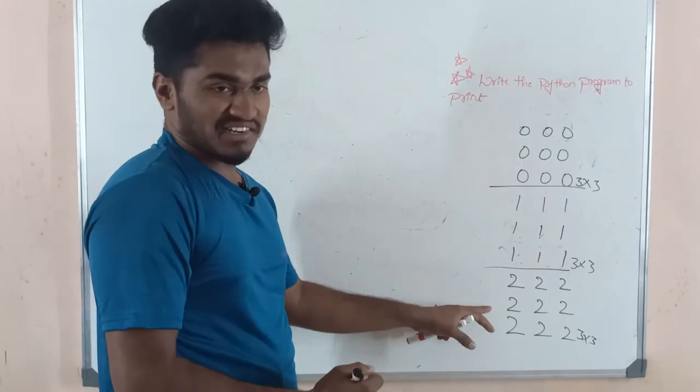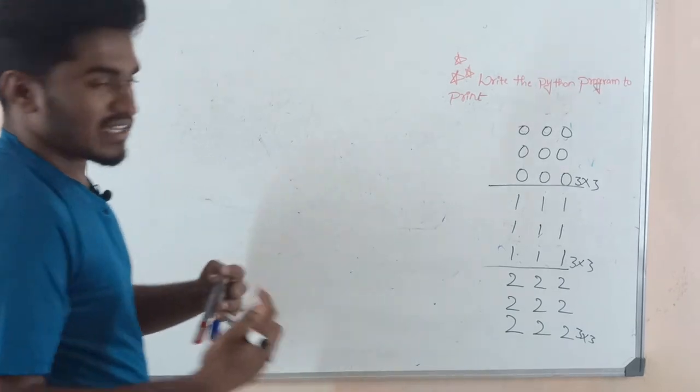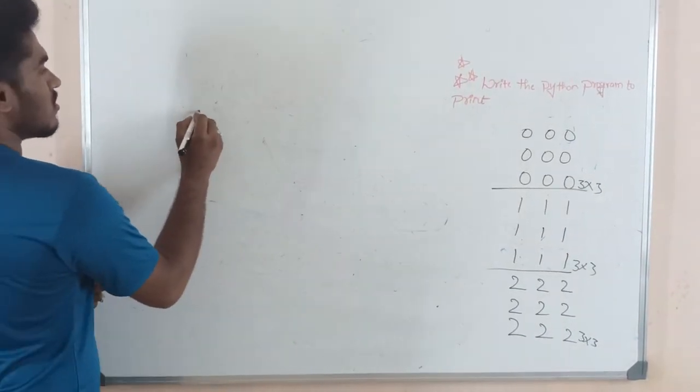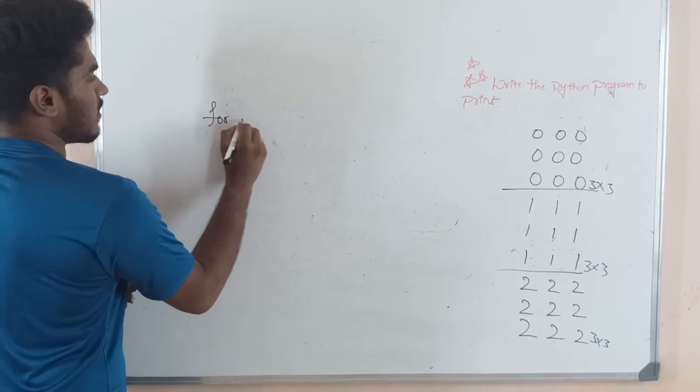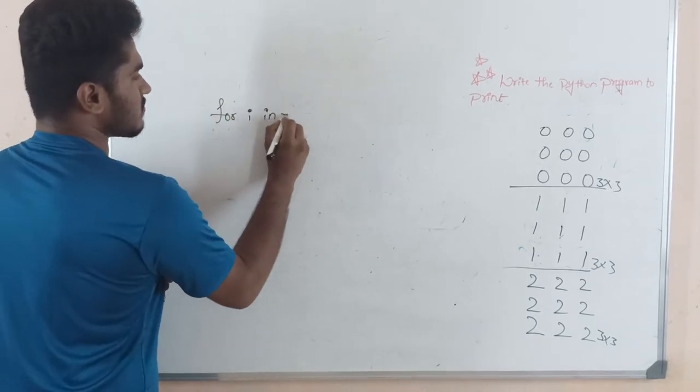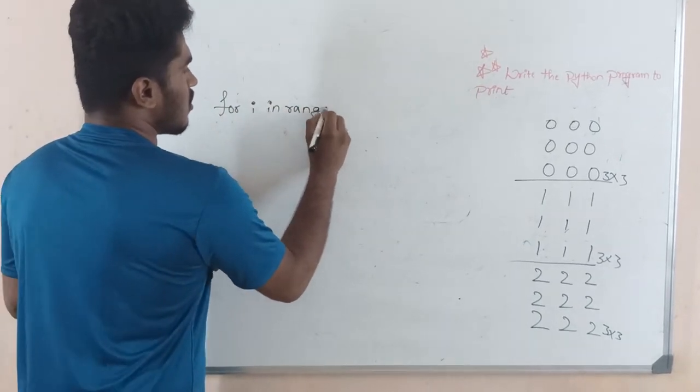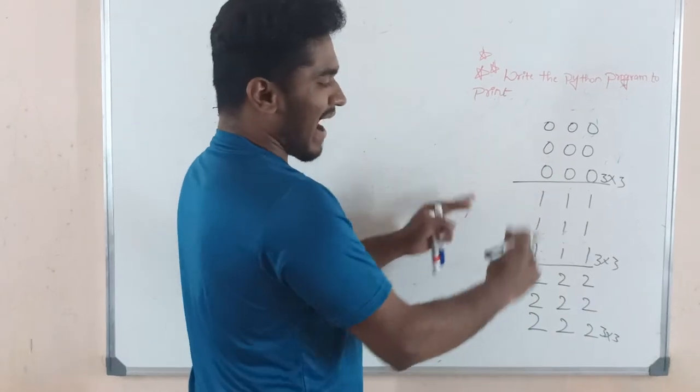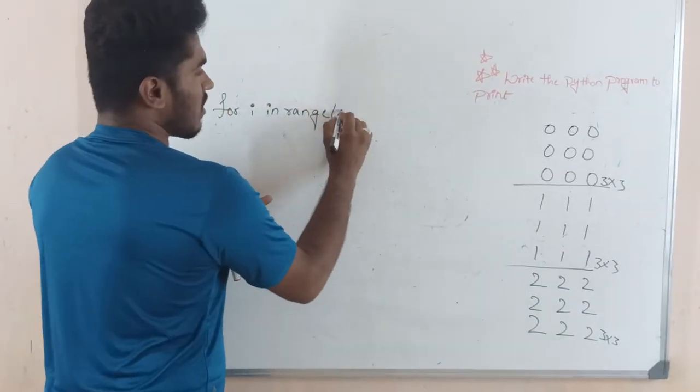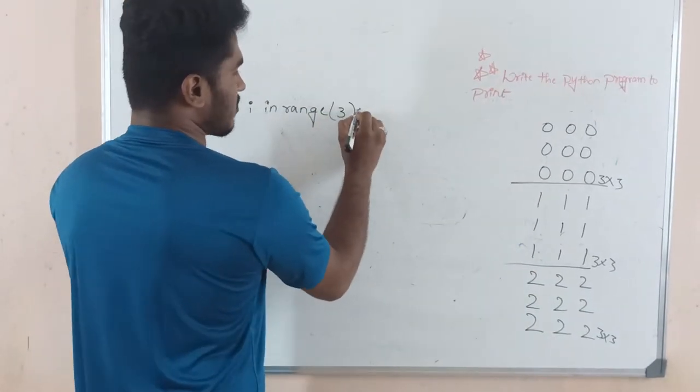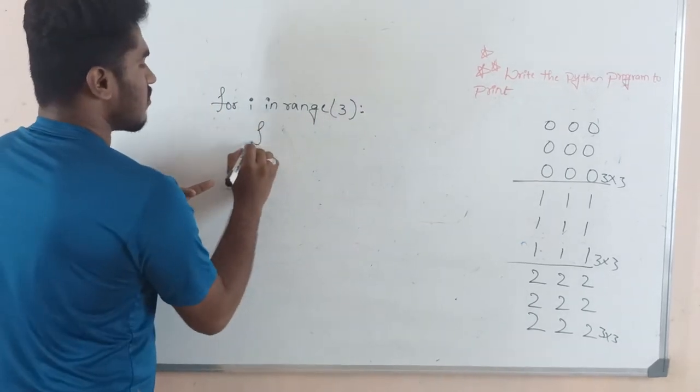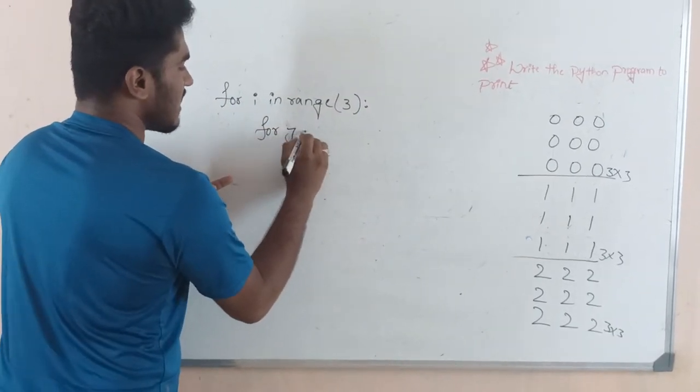So for that, let us see the code for printing that particular pattern. For i in range, we have three matrices, right? So for that I am passing 3 as a parameter. Next, for j in range...